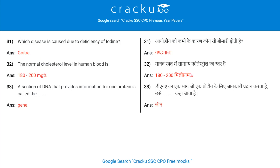Which disease is caused due to deficiency of iodine? Goiter. The normal cholesterol level in the human body is 180-200. A section of DNA that provides information for one protein is called a Gene.